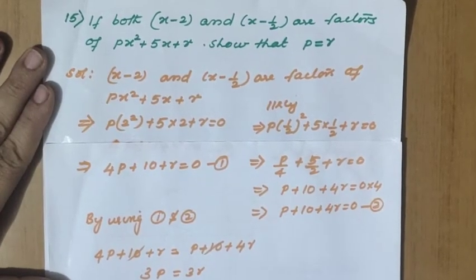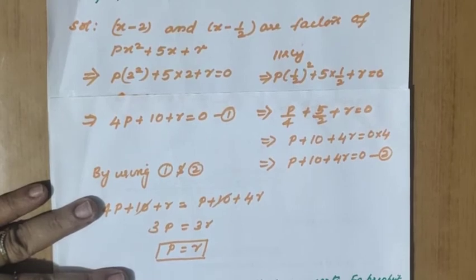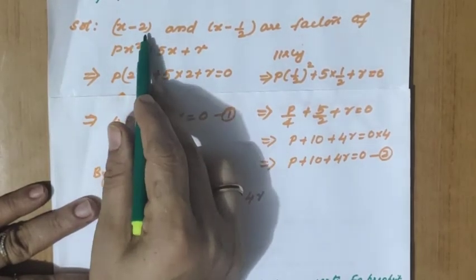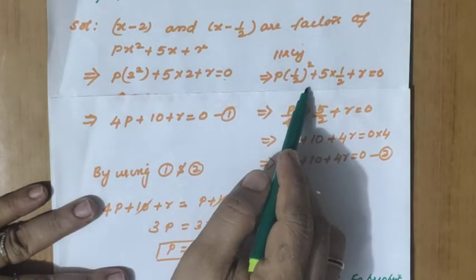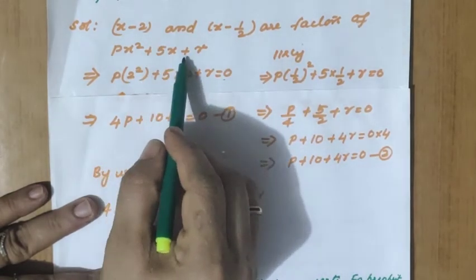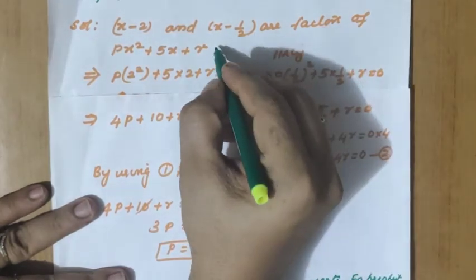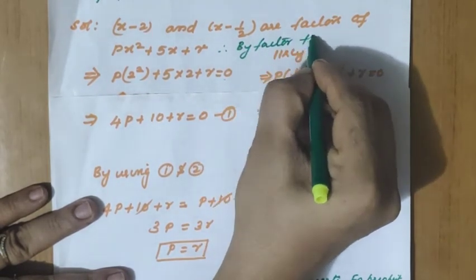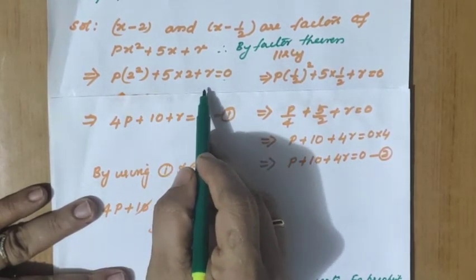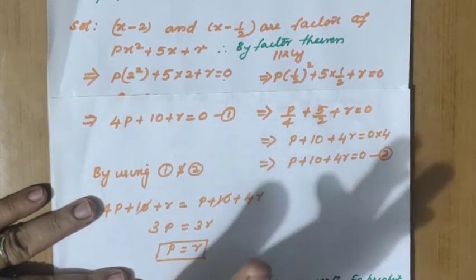If both x minus 2 and x minus 1 by 2 are factors of px square plus 5x plus r, show that p equals r. If x minus 2 is a factor, then substituting x equals 2 gives zero by the factor theorem. So p into 2 square plus 5 into 2 plus r equals 0, which gives 4p plus 10 plus r equals 0. That is equation 1.